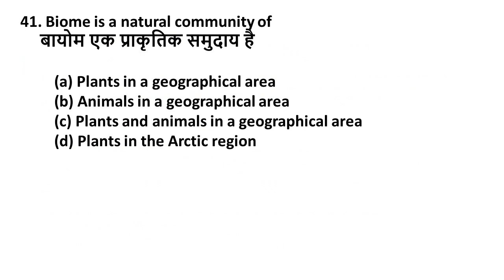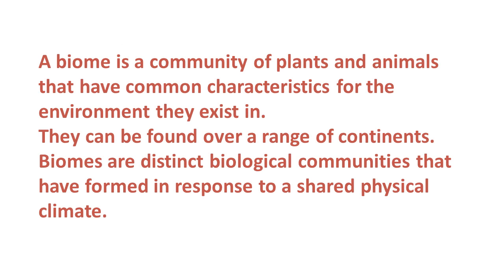Question 41: Biome is a natural community of — Option A: Plants in a geographical area, Option B: Animals in a geographical area, Option C: Plants and animals in a geographical area, Option D: Plants in the Arctic region. The right answer is Option C. A biome is a community of plants and animals that have common characteristics for the environment they exist in, found over a range of continents. Biomes are distinct biological communities formed in response to a shared physical climate.